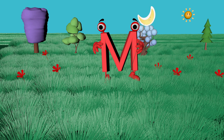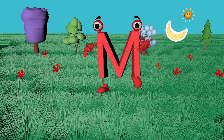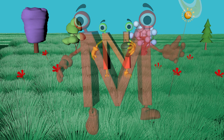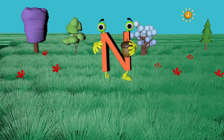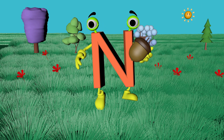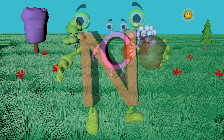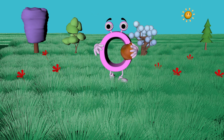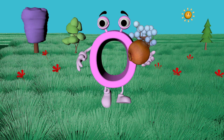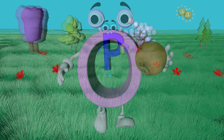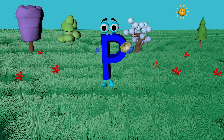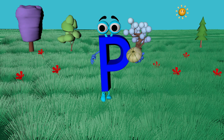M for moon, N for not, O for onion, P for pumpkin.